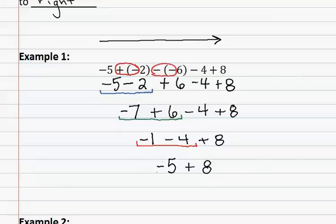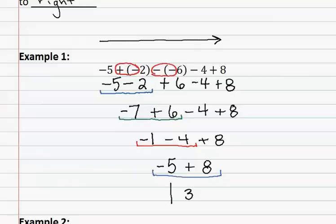In our final step, we only have two numbers left. We decide which rule to use and see that these two numbers have different signs. Since they have different signs, we subtract them and keep the sign of the larger number. Eight minus five gives us three, and since the larger number is eight and it is positive, our answer is positive. We do not need to write the positive symbol in front of the three, so our answer is three.